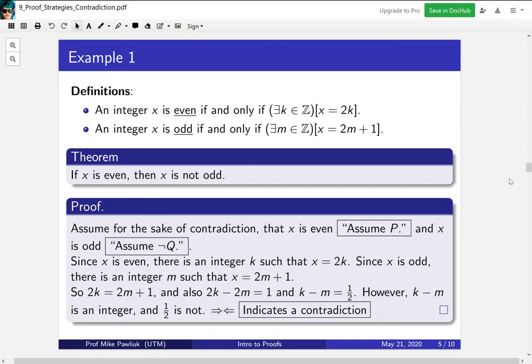A couple features about this proof are worth pointing out. We tell the reader in the first line that we're going to assume for the sake of contradiction. There are a couple ways of saying this, but basically you want to signal to the reader: hey, something weird is about to happen. We're going to use proof by contradiction.